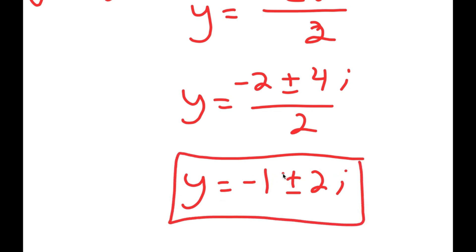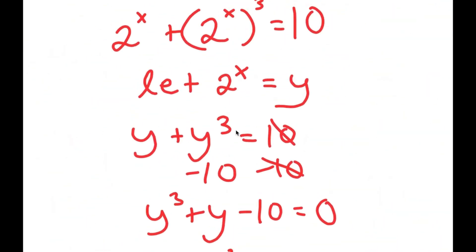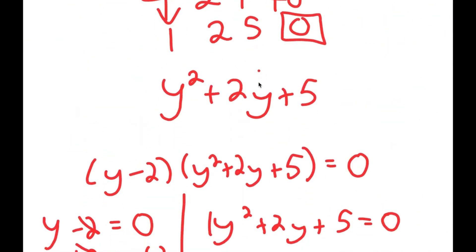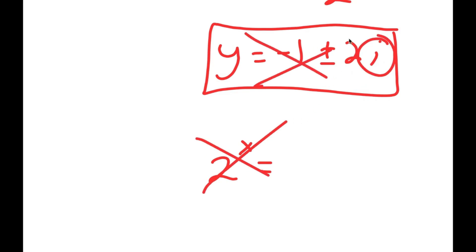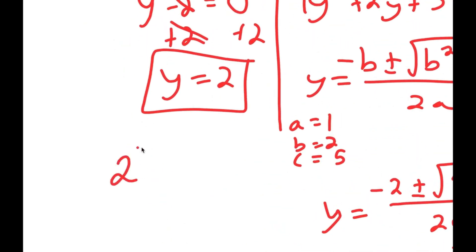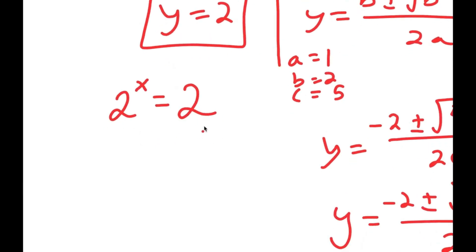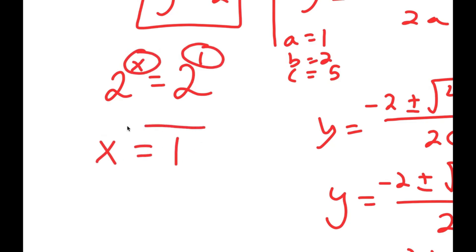So I have three solutions for y, but we're not done, because remember we let 2 to the power of x equal y. Since 2 to the power of x cannot equal an imaginary number, the complex solutions are discarded. My only valid equation is 2 to the power of x equals 2. Rewriting 2 as 2 to the power of 1, the exponents must be equal, meaning x equals 1 is my solution.